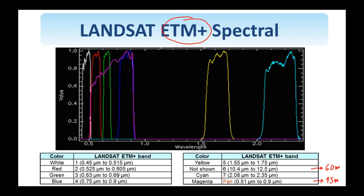Band 8 is the panchromatic band, so you have high spatial resolution at 15 meters but low spectral resolution. This is the visible range of light here — the blue, green, and red channels — while the rest are infrared. Landsat data have helped improve our understanding of Earth, giving us better understanding of things as diverse as coral reefs, tropical deforestation, and Antarctica's glaciers.